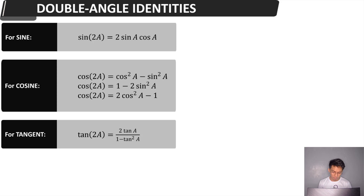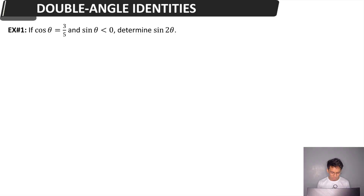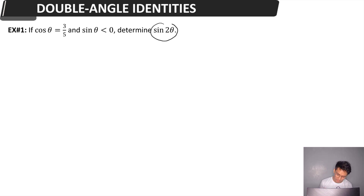These are our formulas for double angle identities. To apply all these identities, let's take example number 1. If cosine theta equals 3 over 5 and sine theta is less than 0, determine sine 2 theta. We are going to solve for the value of sine 2 theta — this is a double angle — and we will apply the double angle identity. But first, to find sine 2 theta, we need to know the value of sine theta.